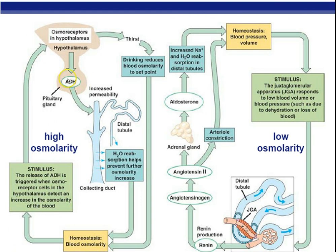Reviewing ADH: when there is high osmolarity — a lot of hypertonic solution in the blood due to water loss or eating salty foods — the hypothalamus detects that through the nervous system and sends a signal to the posterior pituitary to release ADH. The kidney's collecting duct becomes more permeable to water, so we reabsorb more water into the bloodstream. That conserves water, makes urine more concentrated, homeostasis is maintained, and it also stimulates drinking more water.